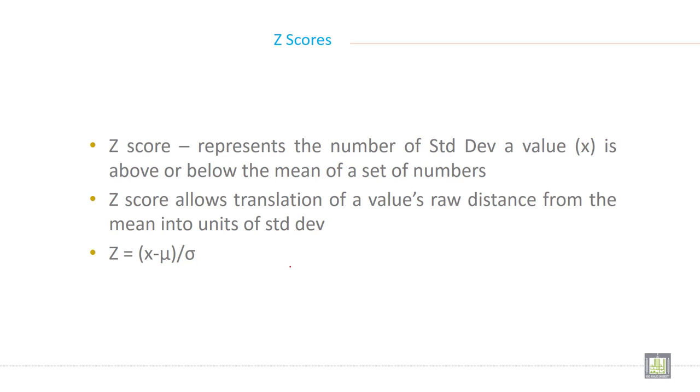And the formula of Z you can write like this: Z equals x minus mu divided by standard deviation. This is the formula to calculate the Z values.